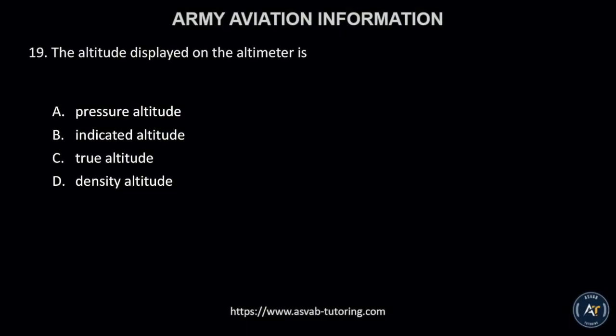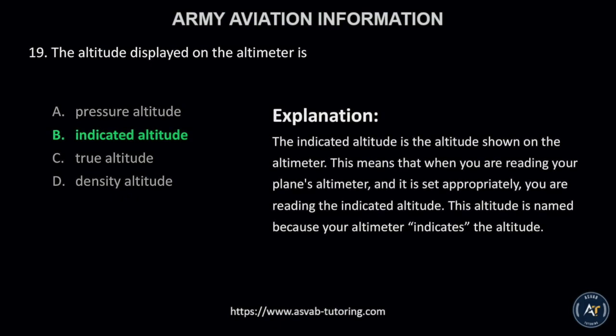Number 19. The altitude displayed on the altimeter is A, pressure altitude; B, indicated altitude; C, true altitude; or D, density altitude? The correct answer is letter B, indicated altitude. The indicated altitude is the altitude shown on the altimeter. When you are reading your plane's altimeter and it is set appropriately, you are reading the indicated altitude. This altitude is named because your altimeter indicates the altitude.